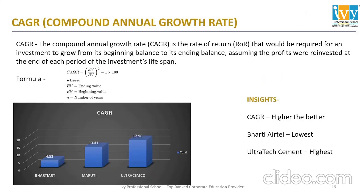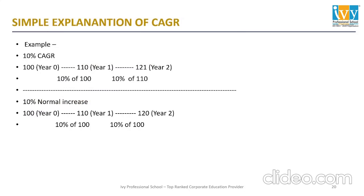The next parameter is CAGR — Compounded Annual Growth Rate. To explain simply: a 10% CAGR means if you have 100 rupees at year zero, next year it grows 10% on that base to become 110. From year one to year two, it grows another 10% but on the base of 110. That's the main difference between simple percentage increase and CAGR — the absolute increase grows each year: 10 rupees in year one, 11 rupees in year two, and so on.